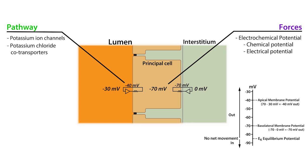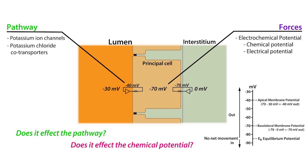With these concepts in mind, the easiest way to think about what influences potassium secretion is to ask yourself: does it affect the pathway — in other words, the potassium channel or the potassium chloride co-transporter? Does it affect the chemical potential — in other words, the concentration of intracellular or luminal potassium? And finally, does it affect the electrical potential — in other words, does it make the luminal potential more negative, which would favor potassium secretion?